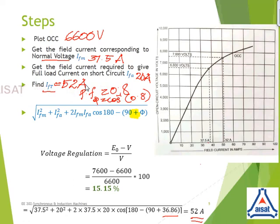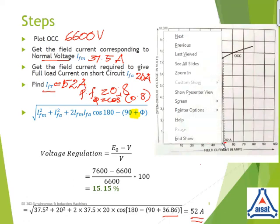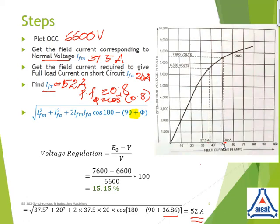Now, we need to find the no load generated EMF corresponding to that 52 ampere. Getting back to the OCC which we have plotted, corresponding to that 52 ampere, 52 ampere comes over here only. Corresponding to that 52 ampere, you erect a perpendicular such that it will intersect your OCC at one particular point. And, see that voltage value over here in the Y axis, it is making it as 7600 volt. That makes your E0 value 7600 volt.